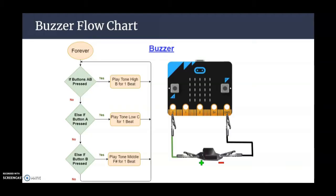What you will notice based on our flowchart is that we do not have an else statement in our program. Once those buttons are released, that tone will stop playing, so we don't need anything to basically shut them off. So let's go ahead and take a look at our program in Microsoft MakeCode.